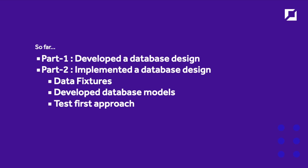Just a quick recap for those who missed past tutorials. In part one, we developed a database design for part of the e-commerce system — the inventory app. In part two, we implemented it utilizing Django: we created the models, built some data fixtures, and went through a test-first approach. We also implemented our testing environment, and that leads us to this tutorial.